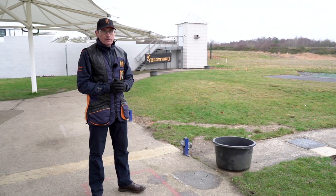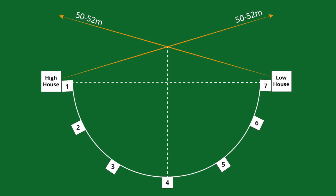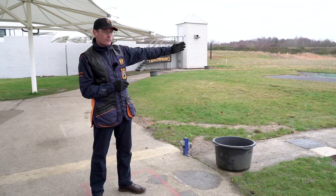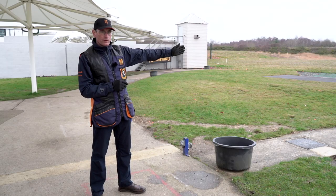The targets themselves are flying between 50 to 52 meters and cross at a central point indicated by the white pole out in front of station four in front of me here. Skeet is normally shot in squads of six, with the same person going first in the same order on each station. The sequence that we shoot these targets is as follows.